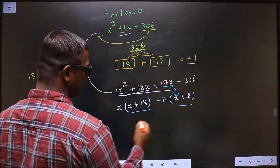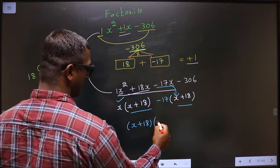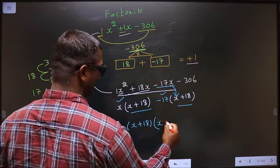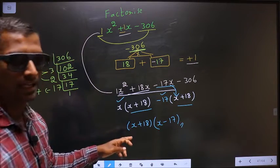Now take x + 18 common. So here I get x, here I get -17. This is the answer: (x + 18)(x - 17).